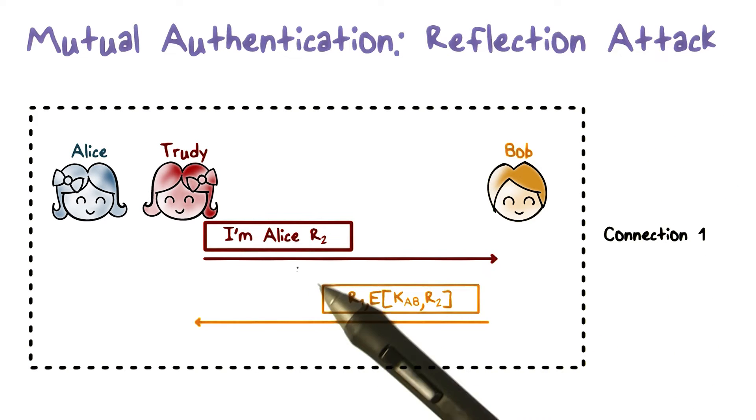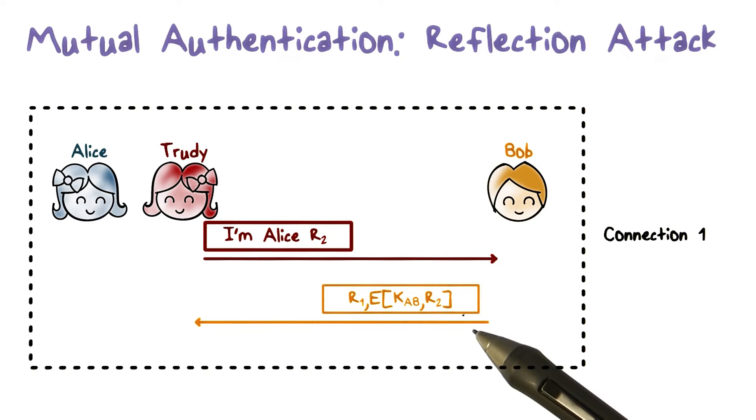First, Trudy impersonates Alice. By following the protocol, Trudy will be stuck at step three because she cannot encrypt the challenge R1 sent from Bob. She does not have the key KAB.